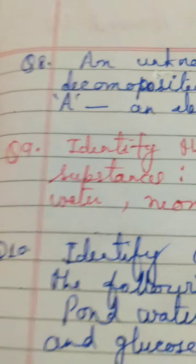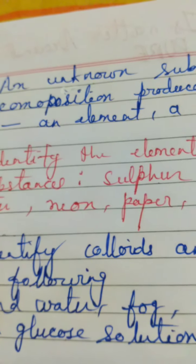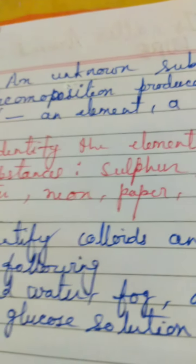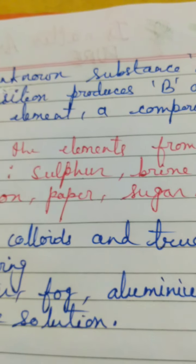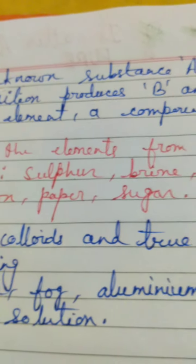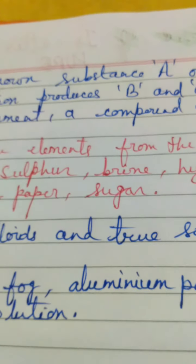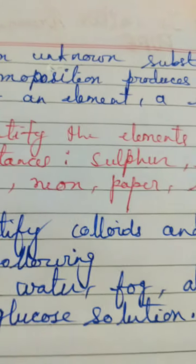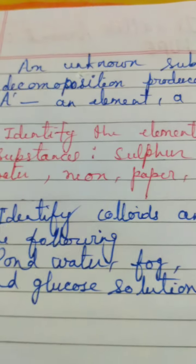Then your water. Water is a compound. It's not an element. Neon is an element because it is a noble gas. Paper. Paper is just a mixture. It is mixture of cellulose with other substances. Then sugar is a compound. It's not an element. So how many elements did you identify here? Sulfur and then your neon. Nothing else.